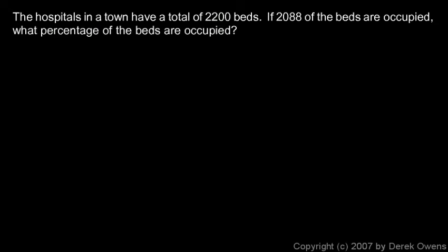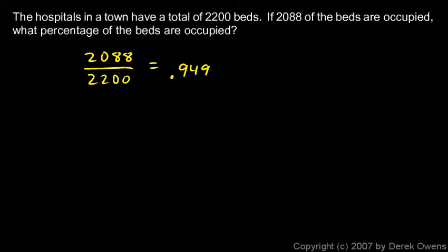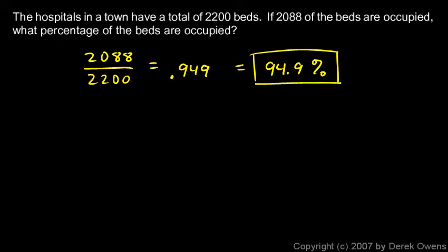This problem follows right along from the last one. The hospitals in a town have a total of 2,200 beds. If 2,088 of them are occupied, what percentage of the beds are occupied? We can do this with a simple fraction: there are 2,088 out of 2,200 beds. We divide that and it comes out to 0.949, which is equivalent to 94.9%.